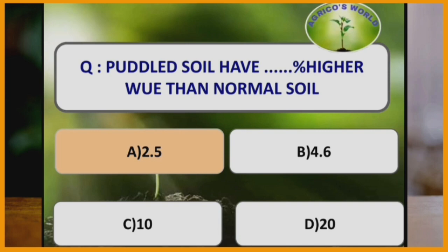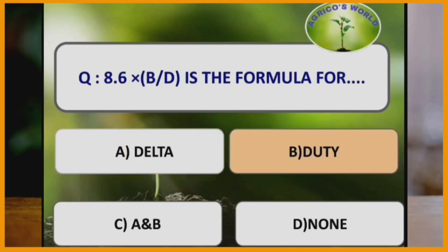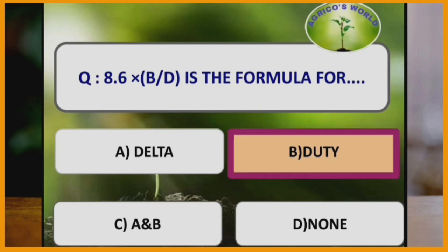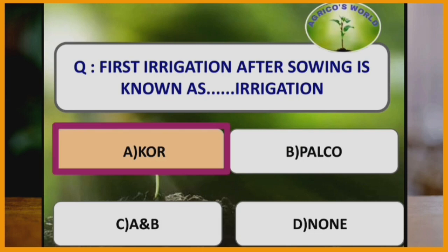Puddled soil has 2.5% higher water use efficiency than normal, i.e. un-puddled soil. The formula 8.6 × base period / delta is the formula for duty.